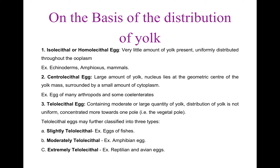Now, Telolecithal Eggs. These eggs contain moderate or large amount of yolk. The distribution of yolk is not uniform; yolk is concentrated more towards one pole, i.e., the vegetal pole. Such eggs in which yolk is concentrated towards one pole are called Telolecithal Eggs. Telolecithal Eggs may be further classified into three types: Slightly Telolecithal, Moderately Telolecithal, and Extremely Telolecithal.